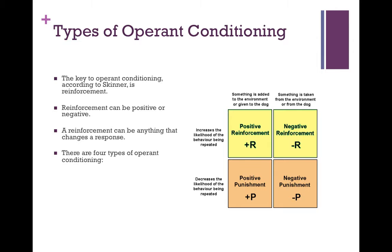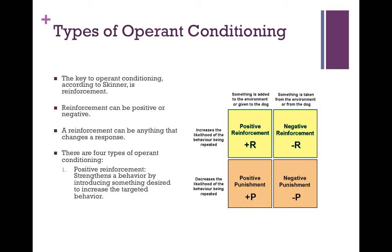There are four types of operant conditioning. One: positive reinforcement strengthens a behavior by introducing something desired to increase the targeted behavior. For example, giving your dog a treat when he lifts his paw to shake hands.